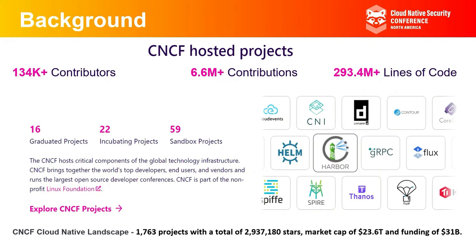Many of the Cloud Native projects perform not just one, but multiple functions. For example, Istio is not just limited to observability and traffic management, but also plays a pivotal role in securing microservices as well.